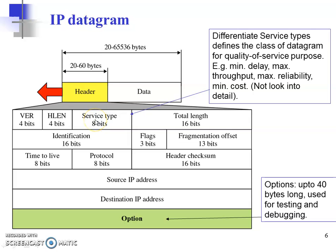Next is the service type field. This service type defines and describes the type of services, for which 8 bits have been kept. Out of these 8 bits, 4 bits give you an idea about the type of service. For the total length field, 16 bits are kept.